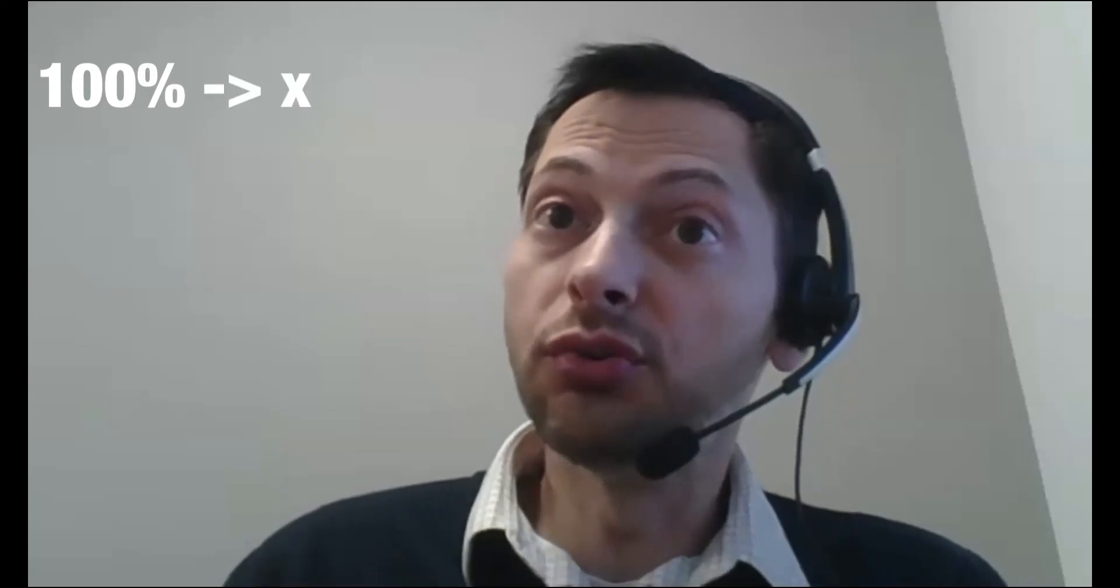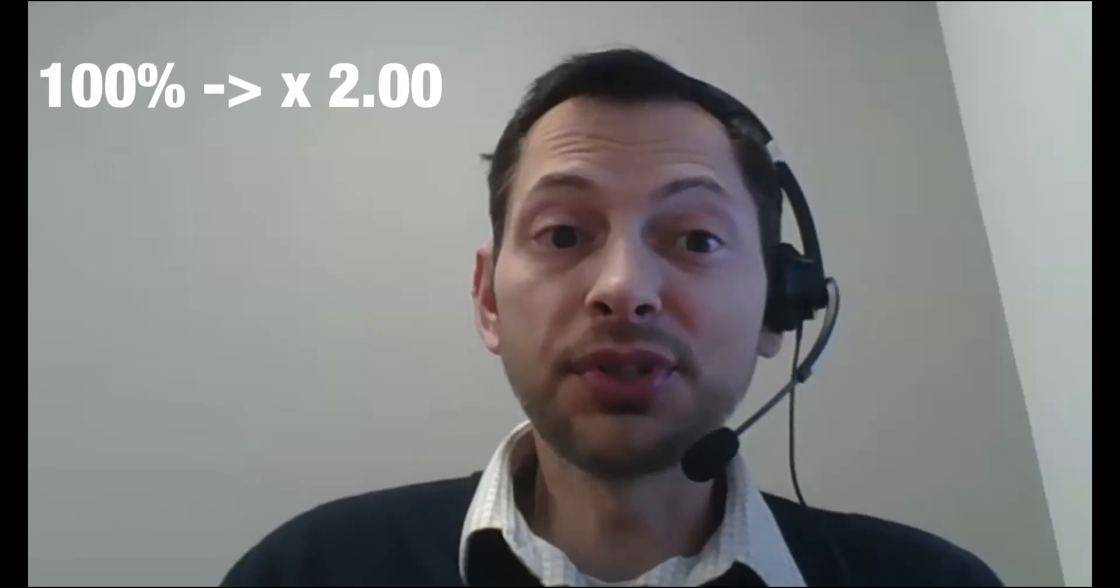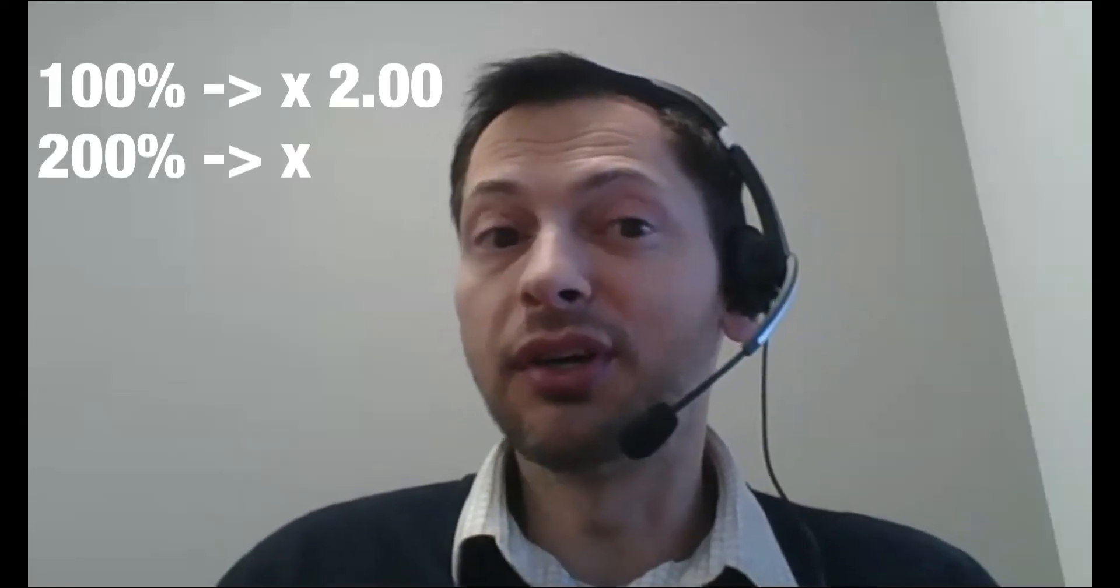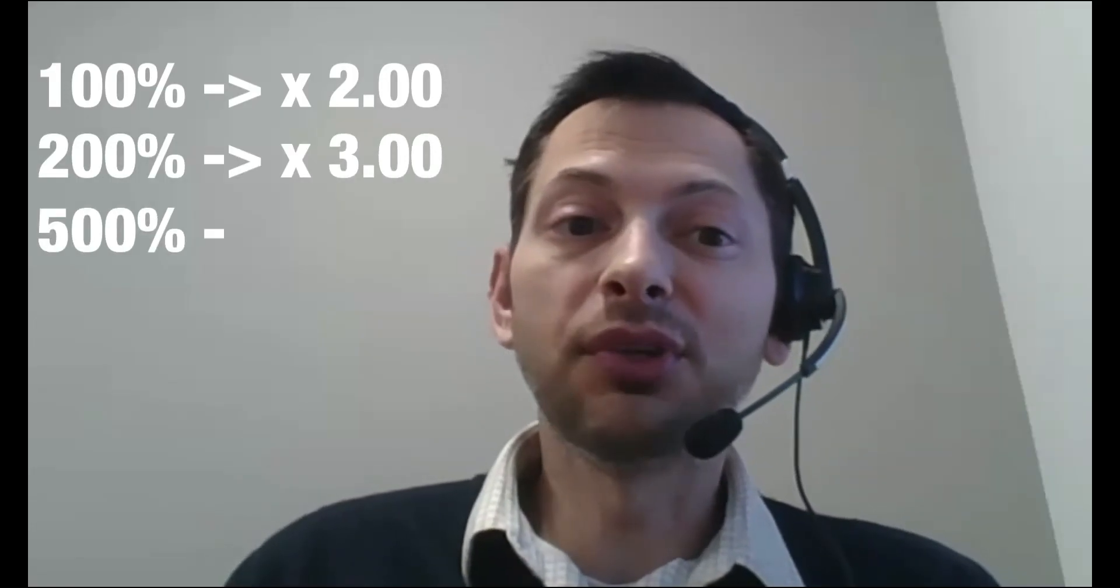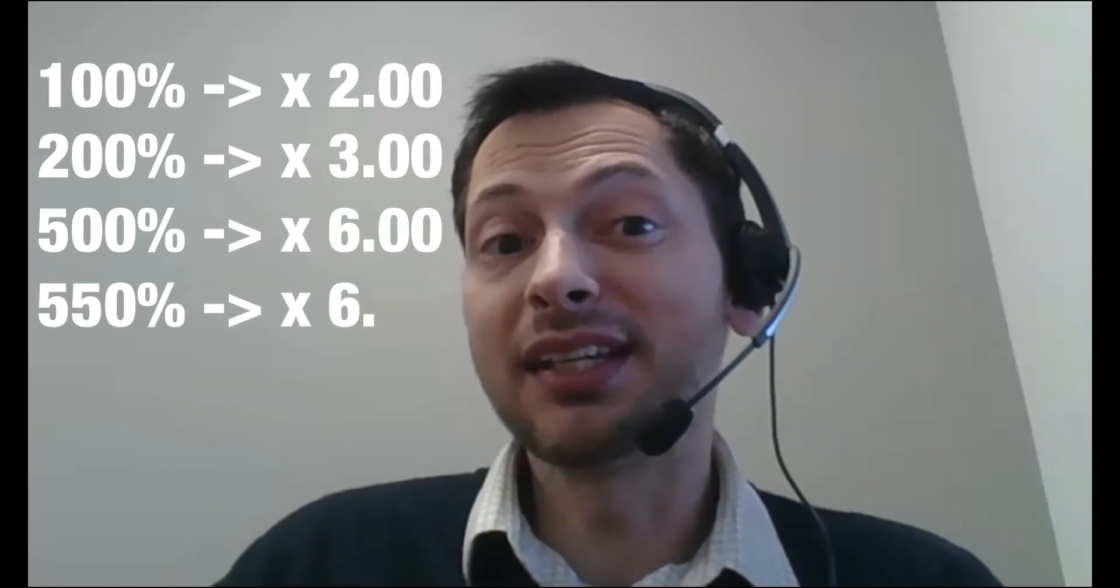If I want to increase a number by 100%, I'd multiply by 2.0, right, I'm doubling the number. For 200%, I would multiply by 3.0. For 500%, I would multiply by 6.0. For 550%, I'd multiply by 6.5. So you get the idea for percent increase.